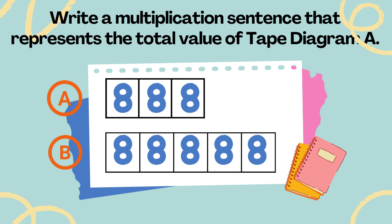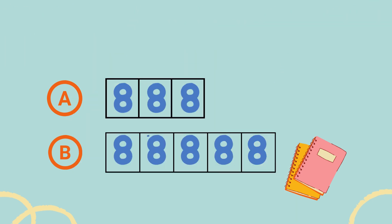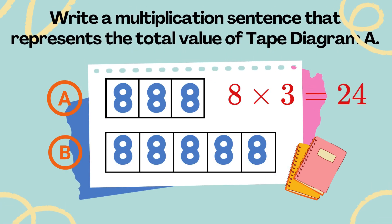Write a multiplication sentence that represents the total value of tape diagram A. There are three units with a value of 8, so the total value is 8 times 3 equals 24.